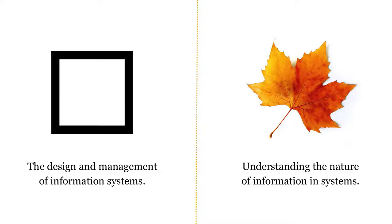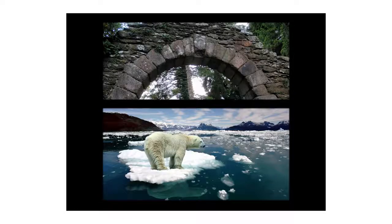To wrap up chapter one: when I first graduated from library school, I wanted to focus on the design and management of information systems. That's still a reasonable framing. But I've realized I also need to work at understanding the nature of information in systems — a much messier, more difficult challenge. You could look at this as a shift from viewing the organization as a machine — the industrial age model — to viewing the organization as an ecosystem.